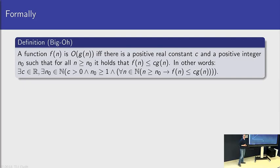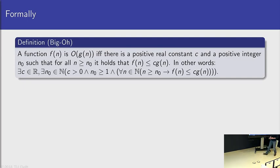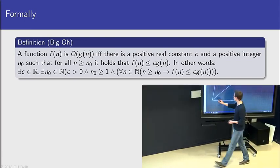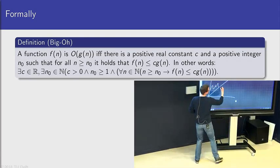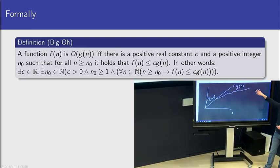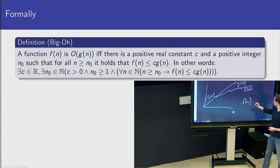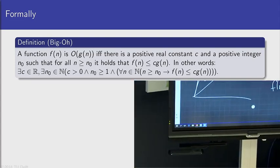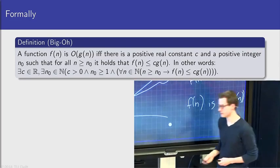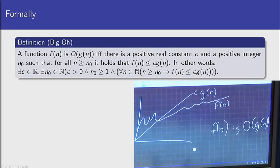Imagine this is my linear function g(n) with some constant in front of it—the slope of this thing. And I have a function that does a bit like this, but afterwards, after a certain point, it remains under this line g(n). Then this function f(n) is O(g(n)). It's upper bounded by the function g(n).